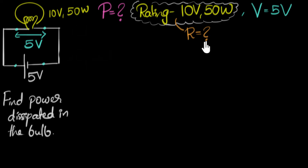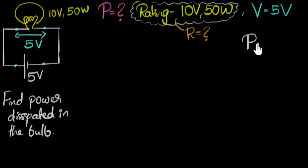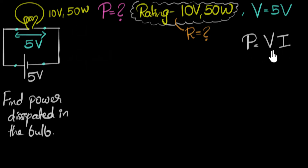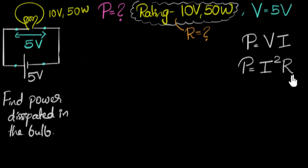To calculate the resistance, we need a relation connecting power, voltage, and resistance. We know that power is the product of voltage and current — that's the main formula for power. Then if we use Ohm's law and substitute V equals IR, we can also write this as I squared R. This is not a new formula; we just substitute Ohm's law. And of course, we can also substitute I equals V over R to get P equals V squared over R. Depending on what we need, we can use any of these to solve a problem.